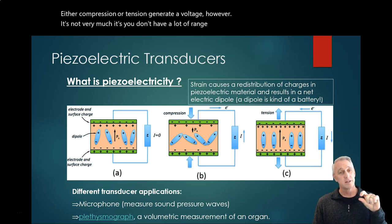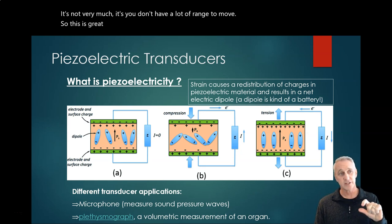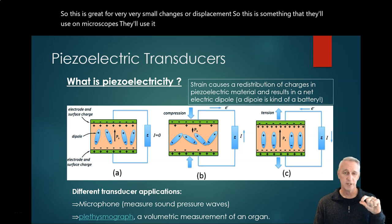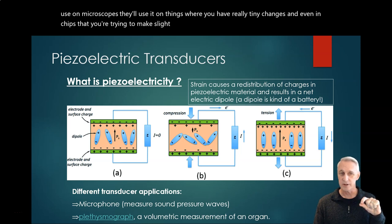However, it's not very much. You don't have a lot of range to move. So this is great for very, very small changes or displacements. This is something that they'll use on microscopes. They'll use it on things where you have really tiny changes, and even in chips that you're trying to make slight tiny adjustments for mirrors and things like that at very small scales.